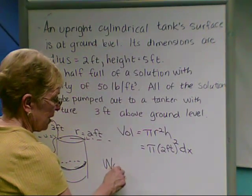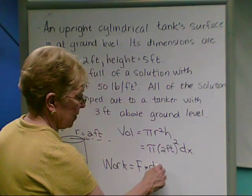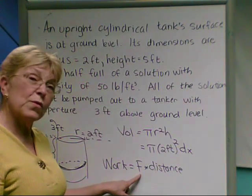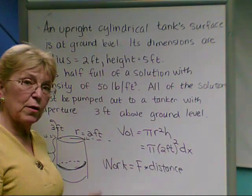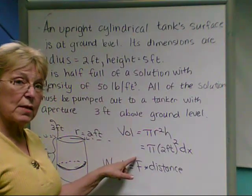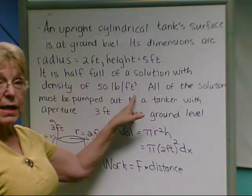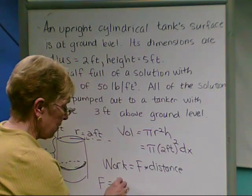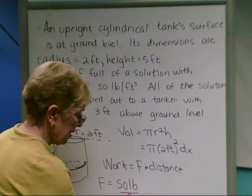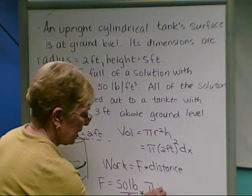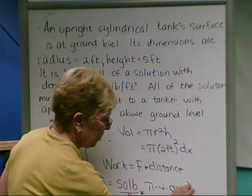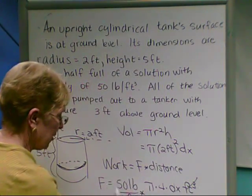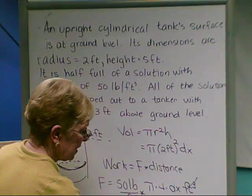We know that work is force through a distance. The force is needed to counteract the weight of the slice or slab. So let's take the volume and multiply by density. The force is 50 pounds per cubic foot times pi times 4 times dx feet cubed. The cubic feet cancel and we're left with a necessary force of 200 pi dx pounds.